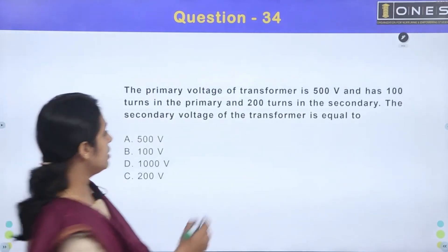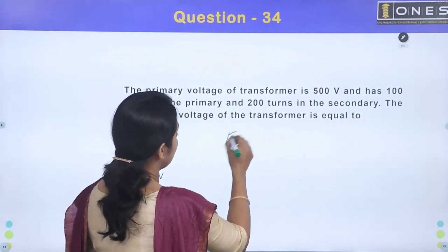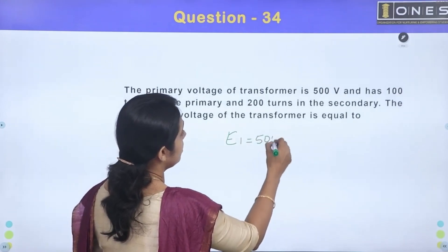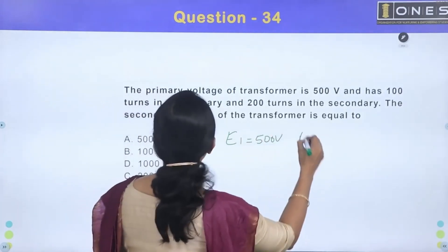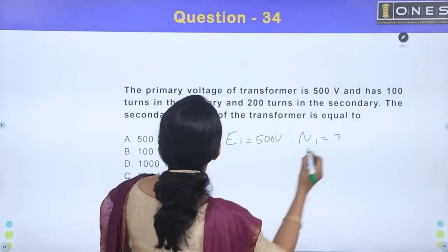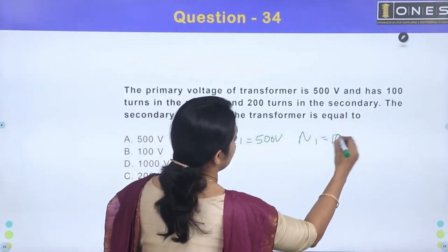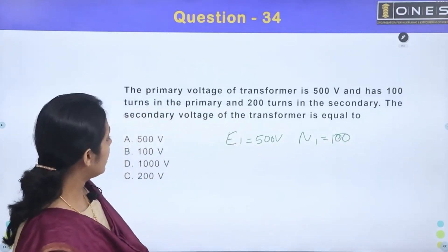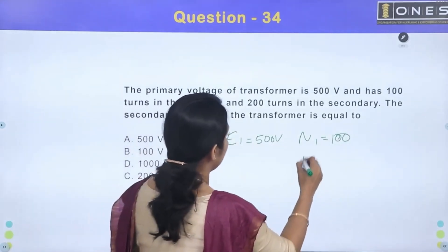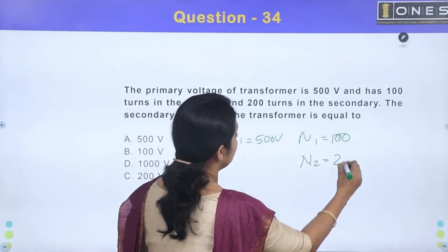So, the primary voltage is 500 volt. The primary number of turns is 100 turns, and the secondary turns is 200 turns.